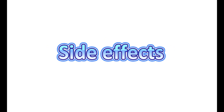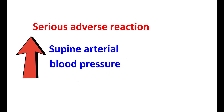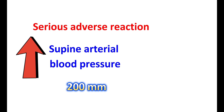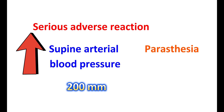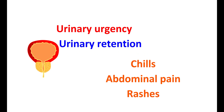One of the serious adverse reactions is elevation in supine arterial blood pressure, potentially reaching 200 mmHg systolic with 10 mg of Midodrine, particularly in people with already elevated systolic pressures. Therefore, supine and sitting hypertension should be closely monitored. Other side effects include paresthesia, itching and pruritus on the scalp, goosebumps due to piloerection, urinary urgency, pain during urination, increased urinary retention, urinary frequency, chills, abdominal pain, rashes, and rarely anxiety, confusion, and dizziness.